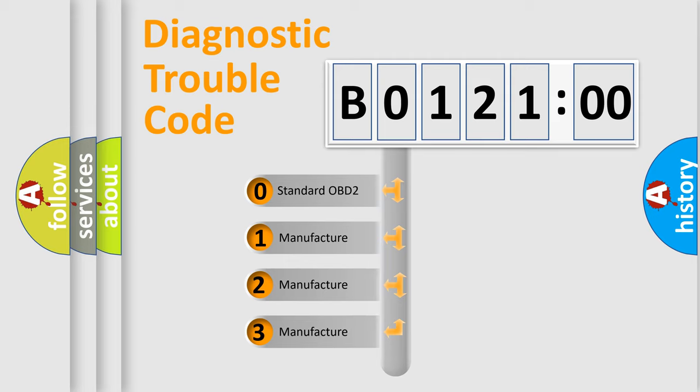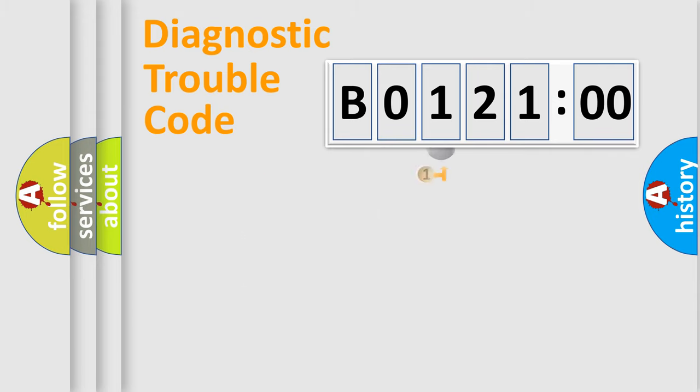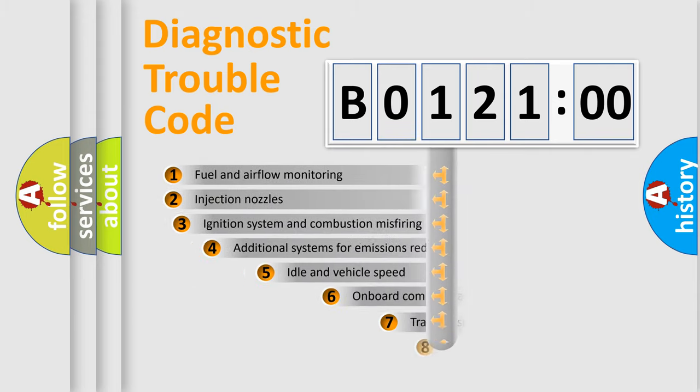If the second character is expressed as zero, it is a standardized error. In the case of numbers 1, 2, or 3, it is a manufacturer-specific error.